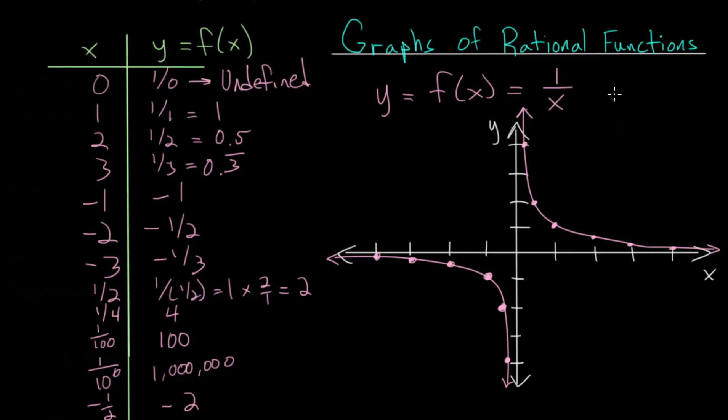This right here is our parent function for 1 over x, or essentially when the denominator has degree 1. This is the simplest rational function that we can make. From this simple function, we can look at more advanced functions that are very similar to this. But before we get to those, let's look at another very simple rational function, when we have 1 over x squared.